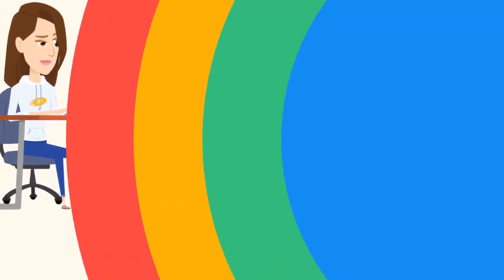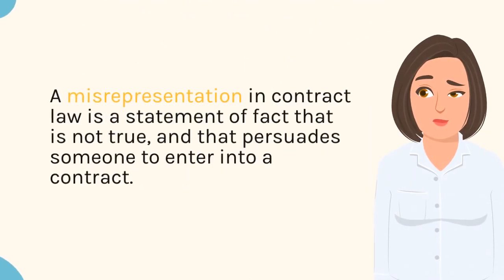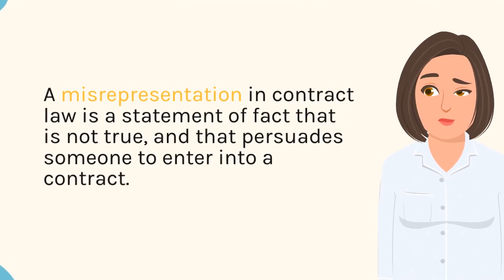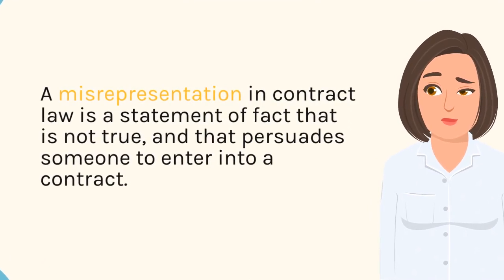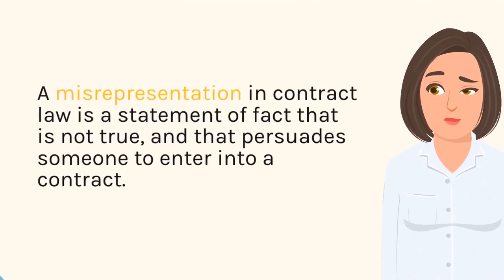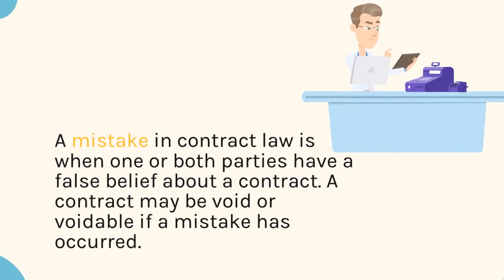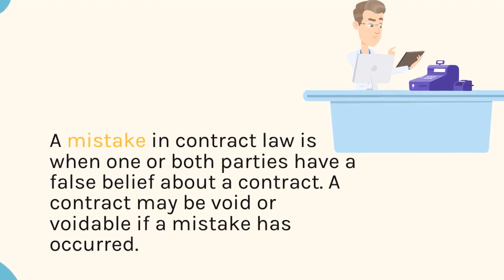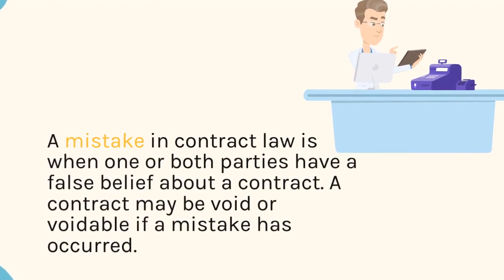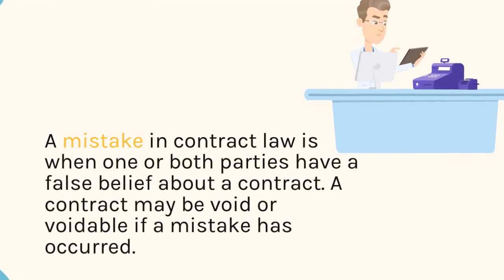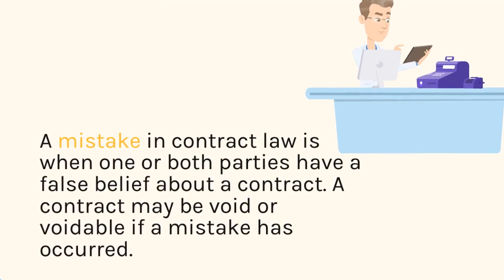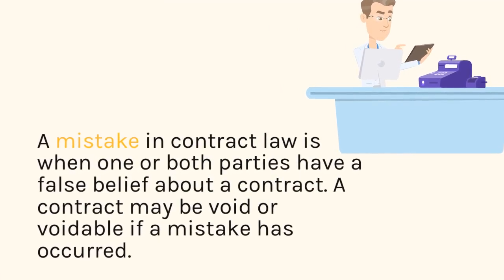The contract may be vitiated for misrepresentation or mistake. A misrepresentation in contract law is a statement of fact that is not true, and that persuades someone to enter into a contract. A mistake in contract law is when one or both parties have a false belief about a contract; a contract may be void or voidable if a mistake has occurred.